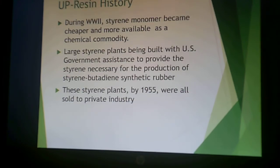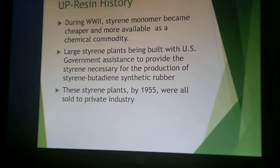During World War II, styrene monomer became cheaper and became a commodity chemical, mainly because of styrene-butadiene rubber. Prior to this, natural rubber was obtained from the Pacific Islands, which wasn't possible during World War II, so styrene-butadiene synthetic rubber was invented. That made styrene a commodity chemical. By 1955, all the styrene plants were sold to private industry, and they needed other things to do with styrene monomer, so unsaturated polyester resins became a large area for that styrene monomer to be used.